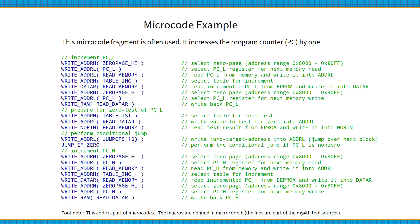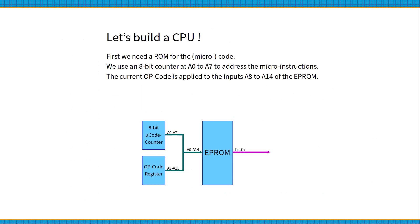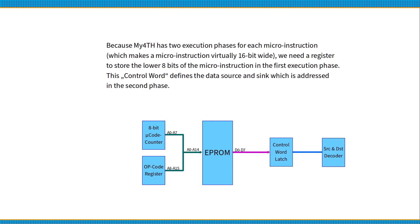Now I would like to share my approach to how I developed the minor computer — let us build a CPU. First, we need a ROM for the microcode. We use an 8-bit counter at A0 to A7 to address the micro-instructions. The current opcode is applied to inputs A8 to A14 of the EEPROM. Because MyForth has two execution phases for each micro-instruction, we need a register to store the lower 8 bits of the micro-instruction in the first execution phase. This control word defines the data source and sink addressed in the second phase.